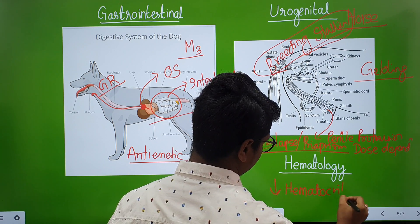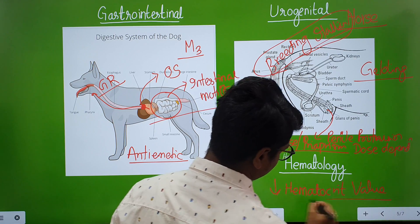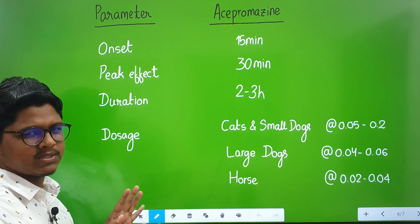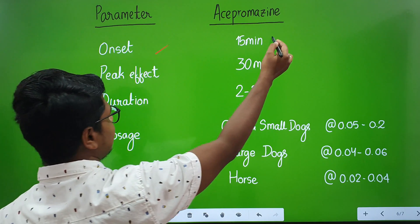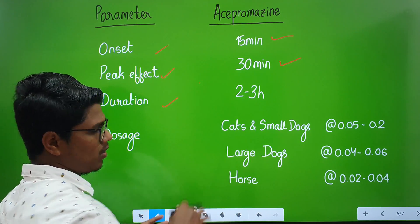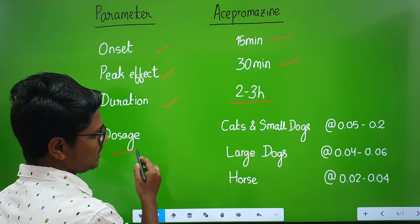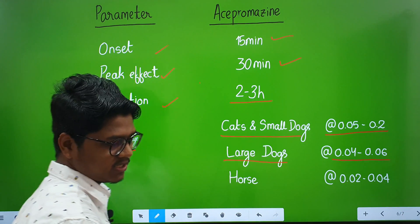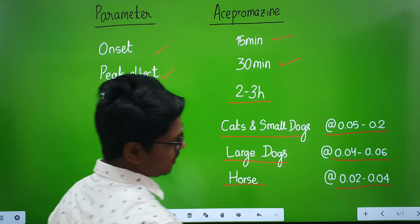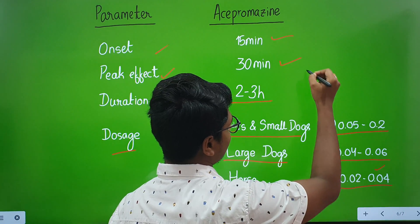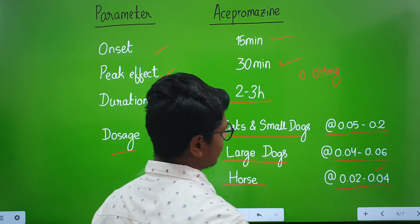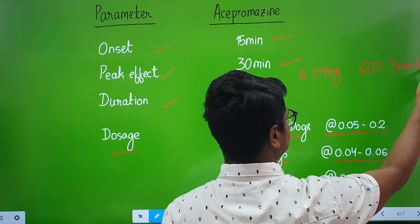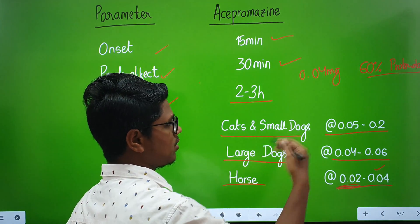Hematology: acepromazine reduces the hematocrit value. Pharmacokinetics: onset of action is 15 minutes, peak effect within 30 minutes, duration of sedation is 2 to 3 hours. Dosage: cats and small dogs — 0.05 to 0.2 mg/kg body weight; large dogs — 0.04 to 0.06 mg/kg; horses — 0.02 to 0.04 mg/kg. At 0.04 mg/kg in horses, approximately 60% of penile length is protruded.